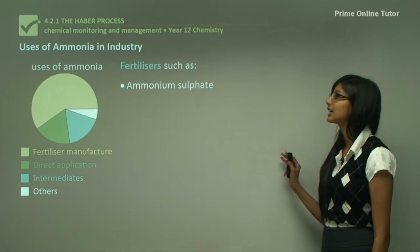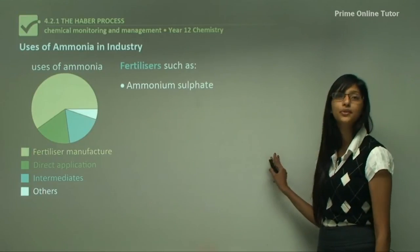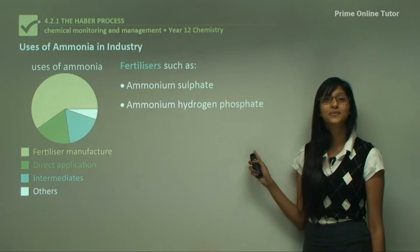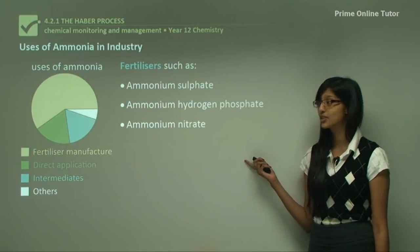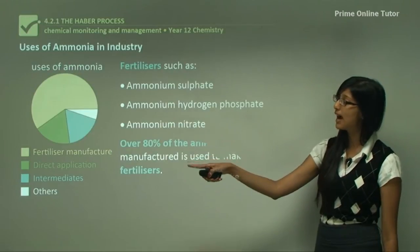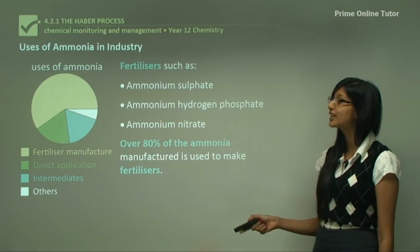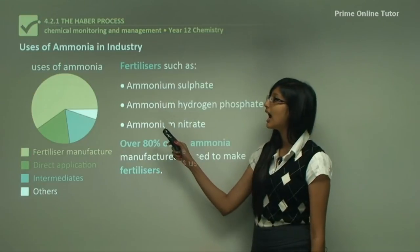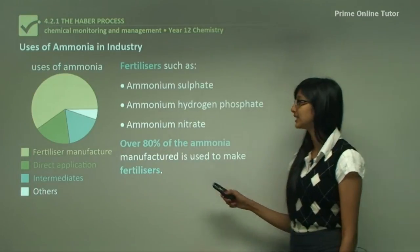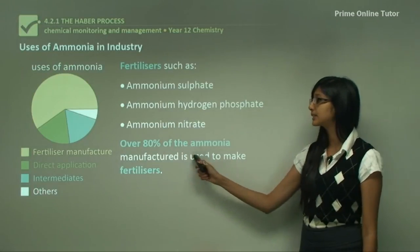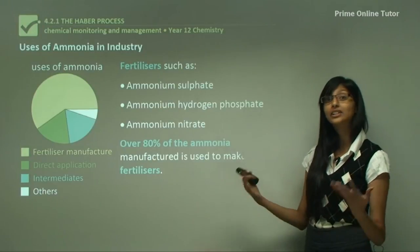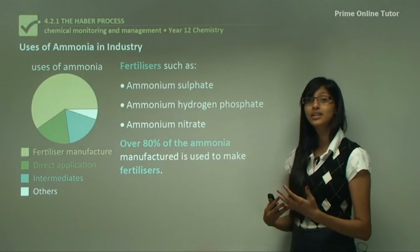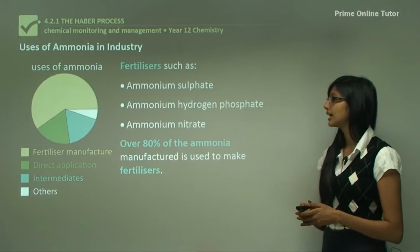The other uses of ammonia include fertilizers. The types of fertilizers produced from ammonia include ammonium sulfate, ammonium hydrogen phosphate, and ammonium nitrate. From the pie chart you can already see that more than half of the ammonia we produce is used to manufacture fertilizers — in fact over 80 percent of the ammonia manufactured is actually used to make fertilizers. Therefore ammonia has a very significant use in farming.